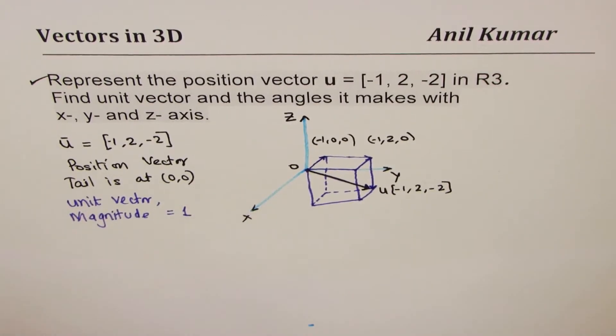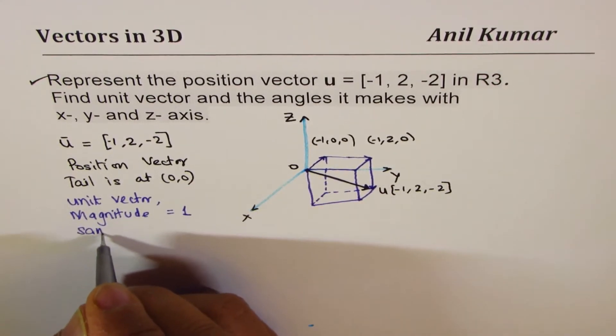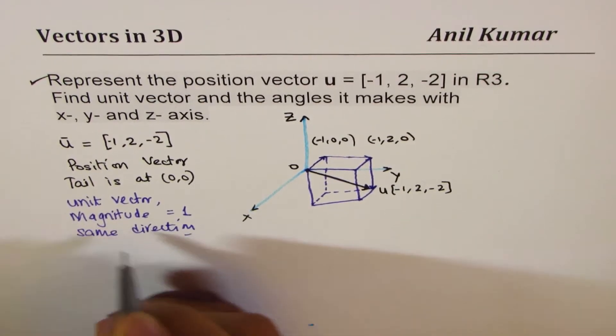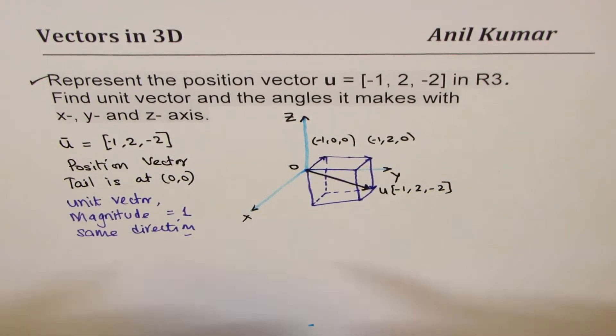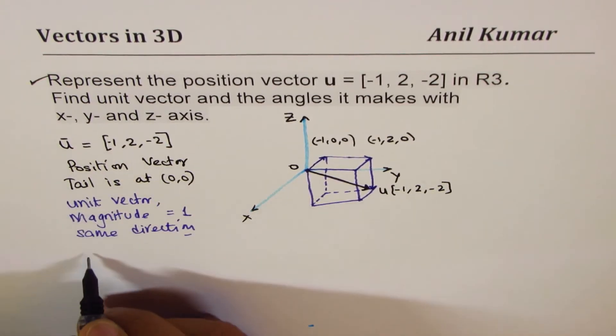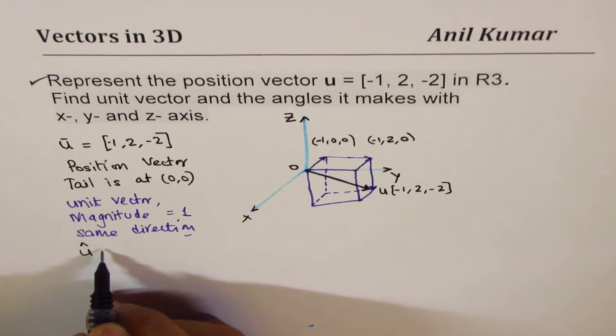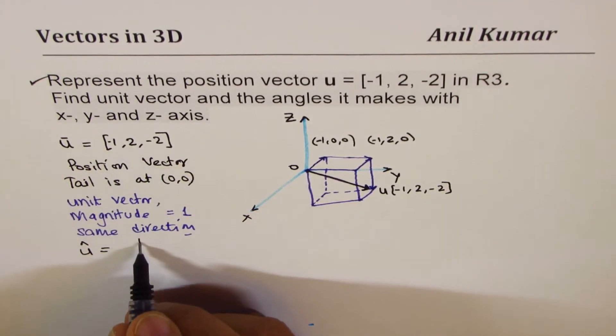So, unit vector is kind of like this. And one of the ways to represent is û with this sign. So, the vector is given to us.